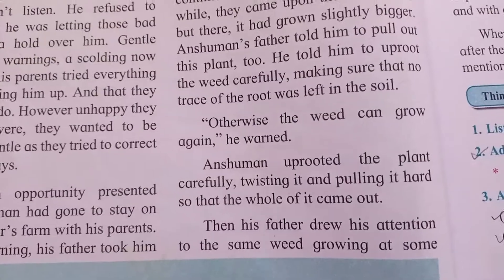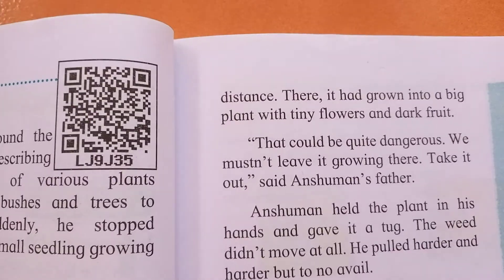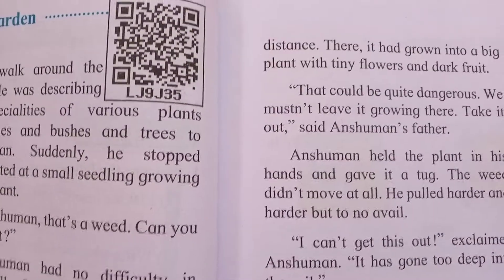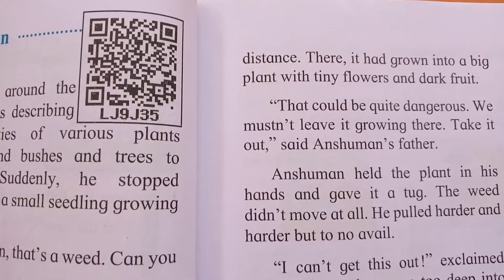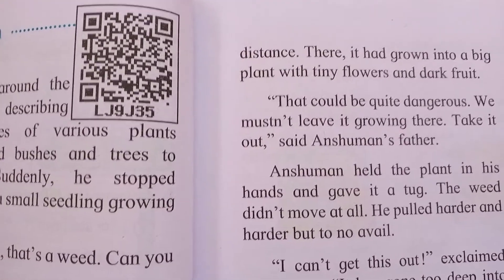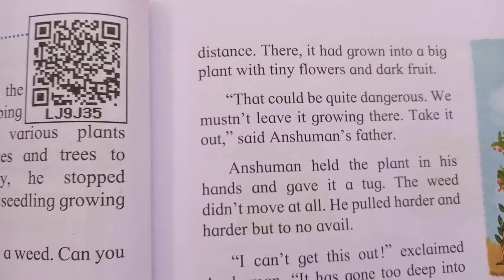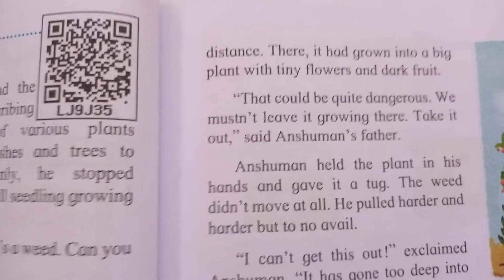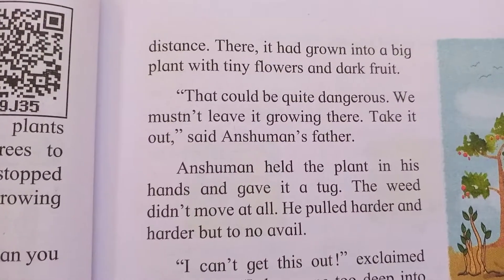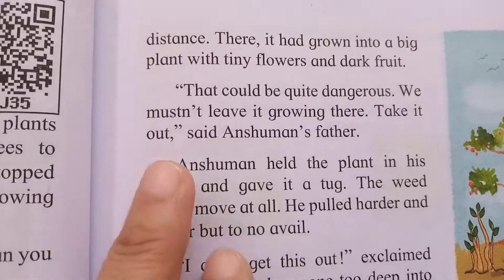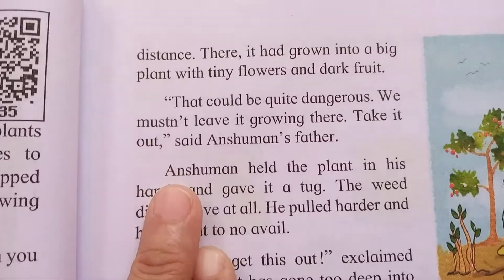Then his father drew his attention to the same weed growing at some distance. The unwanted plant was in another place. It had grown into a big plant now — the weeds were growing with tiny flowers and dark fruit. Naturally the roots would be very hardened in the soil and it was not quite easy to remove that. They could be quite dangerous.